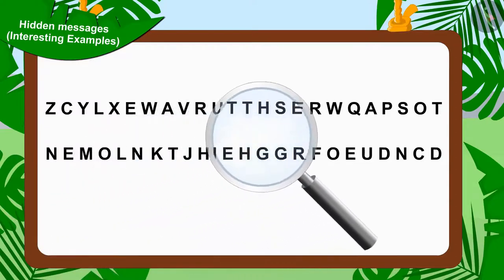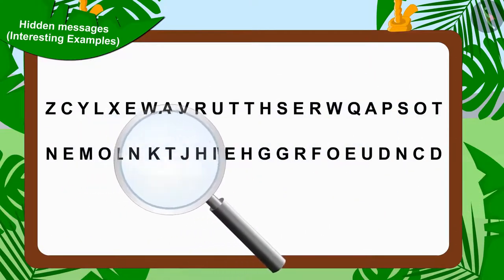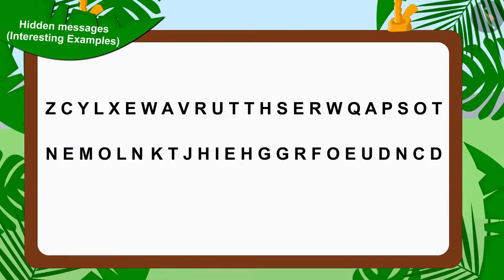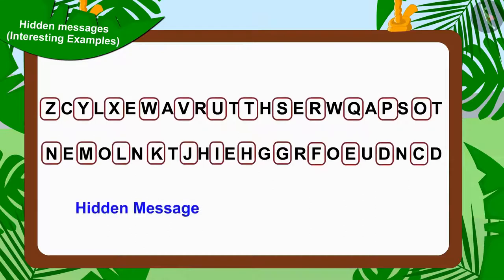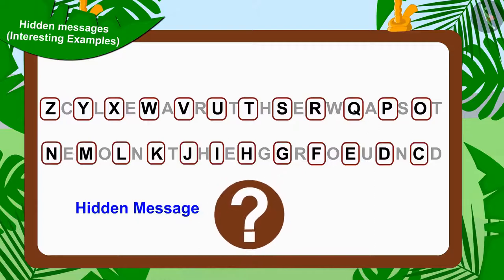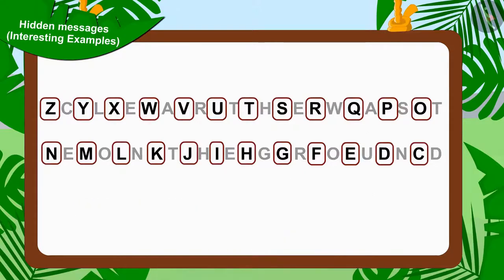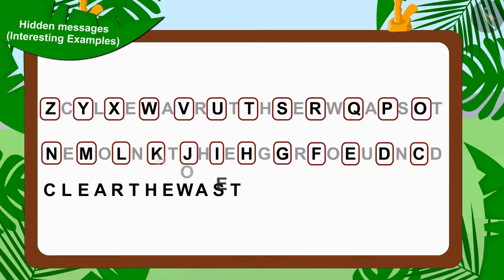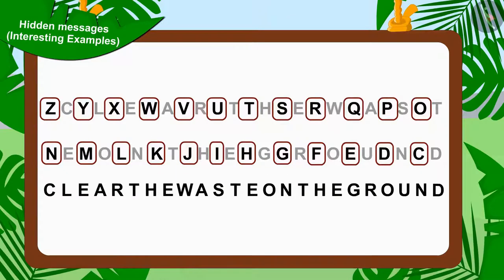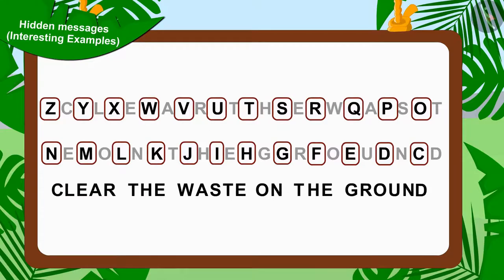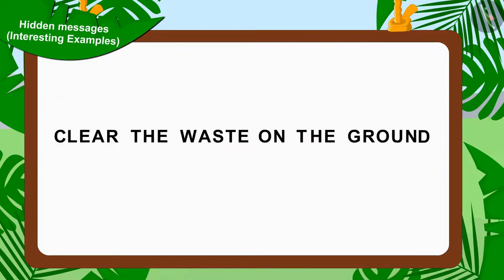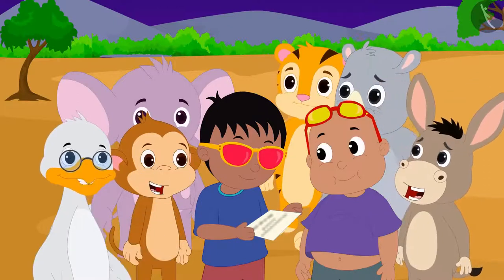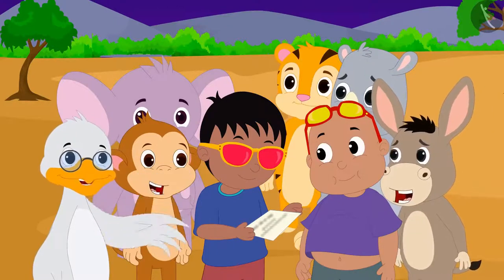If we look closely, we will find that the alphabets here are written in reverse order. But do you understand any hidden message from these alphabets? No — let us now write the remaining alphabets separately. Now do you understand Jeev's hidden message? Absolutely right. In this hidden message it is written: 'Clear the waste on the ground.' Like us, the character quickly understood this hidden message and read it to the villagers.